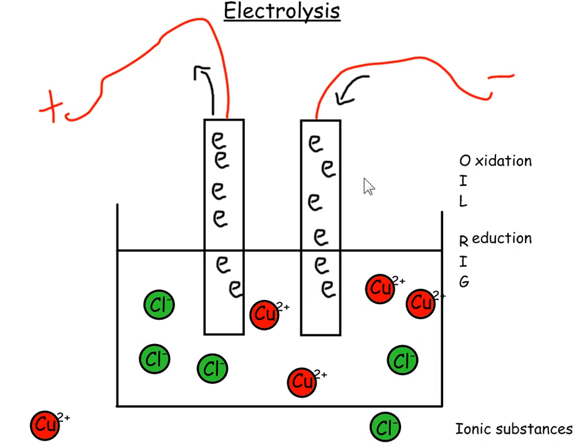Now I can set up this system, electrolysis, which will then separate the copper from the chlorine. If I have a look at these electrodes, these have been put into the molten copper chloride.